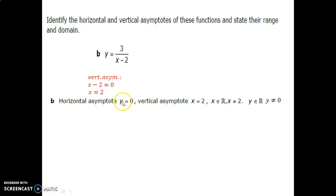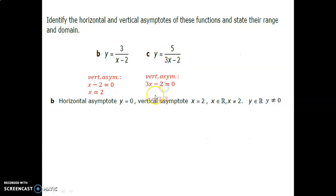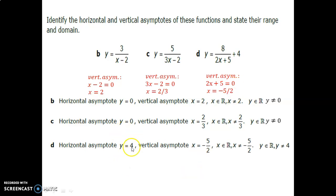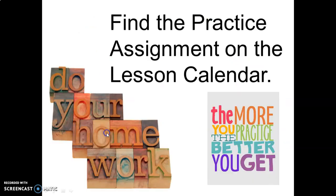The horizontal asymptote is y equals 0 when there's no number added after the fraction. For a function where the denominator gives x equals 2 thirds when set to 0, the vertical asymptote is x equals 2 thirds and horizontal is y equals 0. For the last example, setting the denominator to 0 gives the vertical asymptote, and a shift of 4 units up means the horizontal asymptote is y equals 4. Make sure to study this carefully — you are now ready for practice.